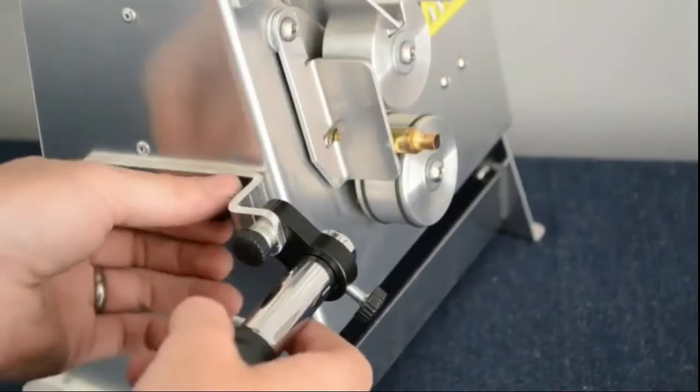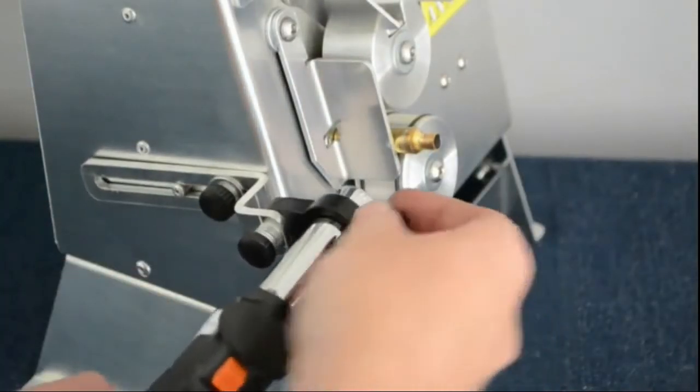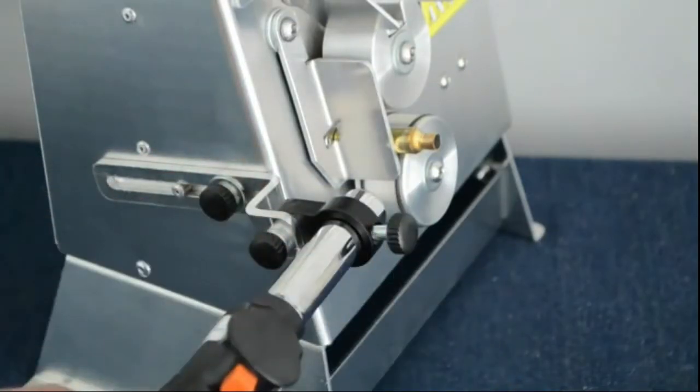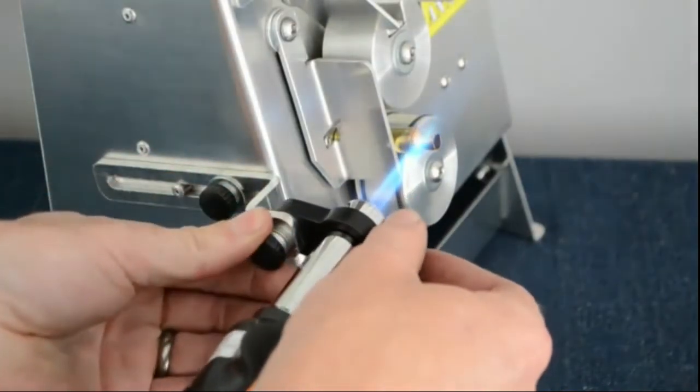A fully adjustable gas torch support arm is mounted to the machine with easy-to-use thumb screws and the machine is supplied with an auto-igniting butane gas torch.